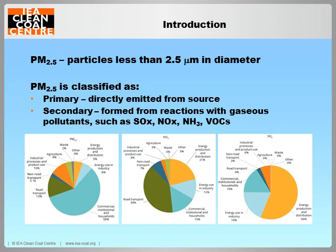Burning coal releases all these gaseous pollutants plus mercury and other pollutants. In 2012 in Europe, 5% of PM2.5 was from energy production and distribution sectors, while 56% of SO2 and 21% of NOx came from these sources as well. Therefore, coal-fired power plants contribute significantly to PM2.5 concentrations in the air. To control and regulate PM2.5 from coal-fired power plants, SOx and NOx must be included.